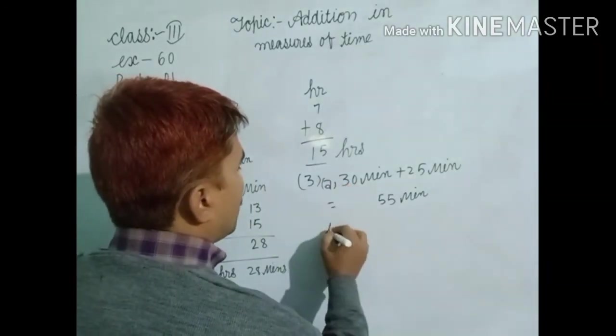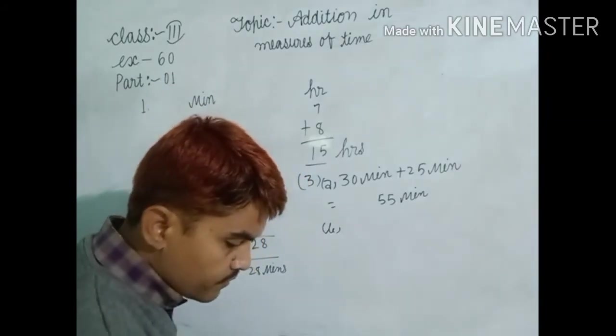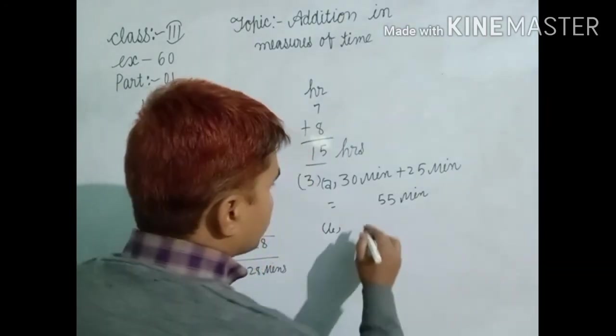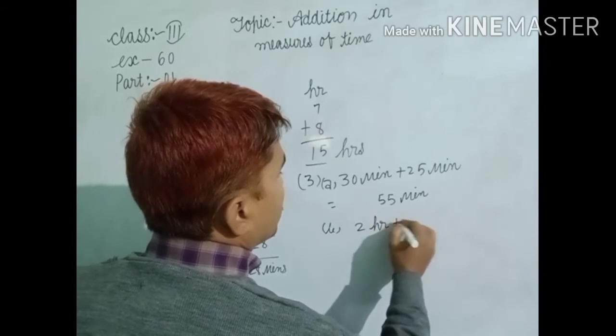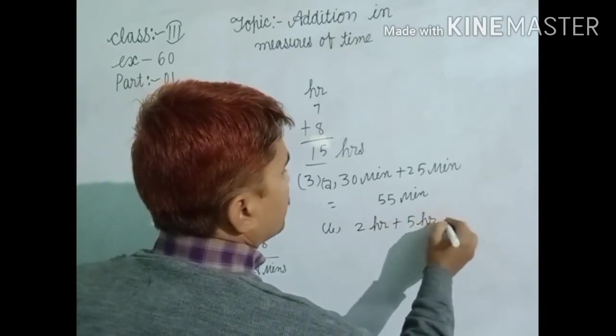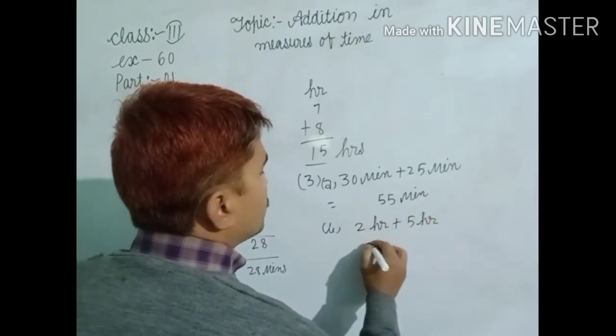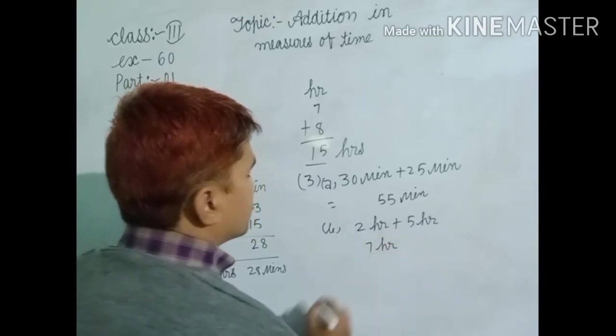Now, another question. Here, 2 hour plus 5 hour. That means 5 plus 2. That means 7 hours.